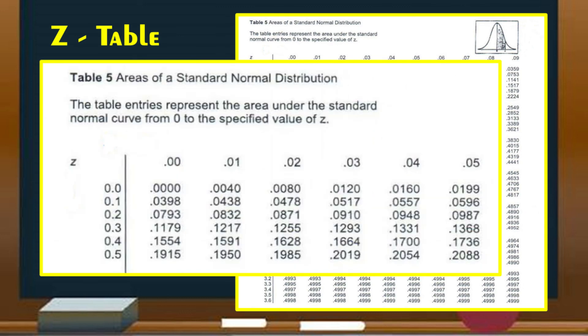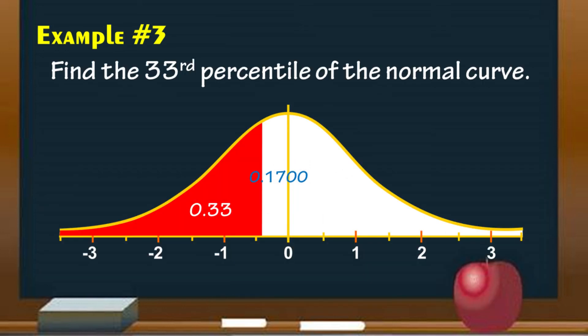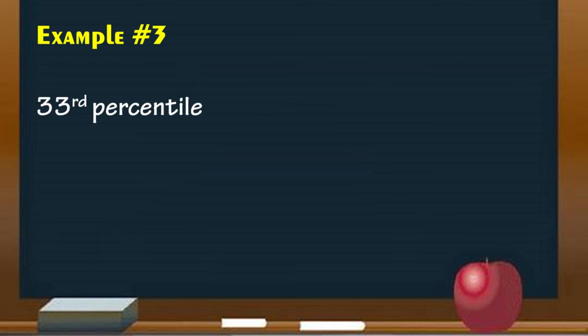And the Z value that corresponds to 0.1700 is 0.44. Thus, 33rd percentile is Z equals negative 0.44. It is negative because it is less than 50% or it is below the mean.